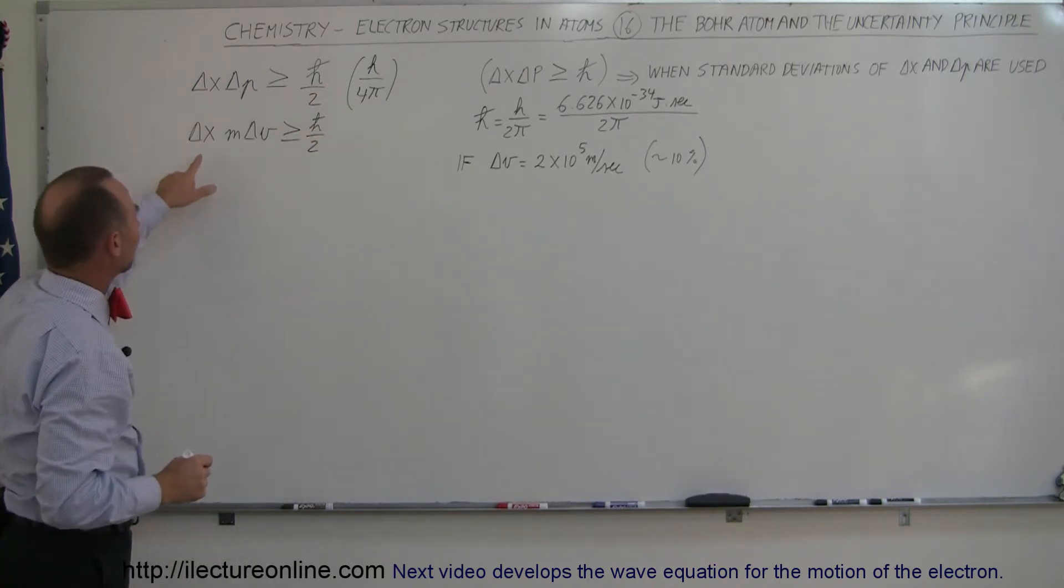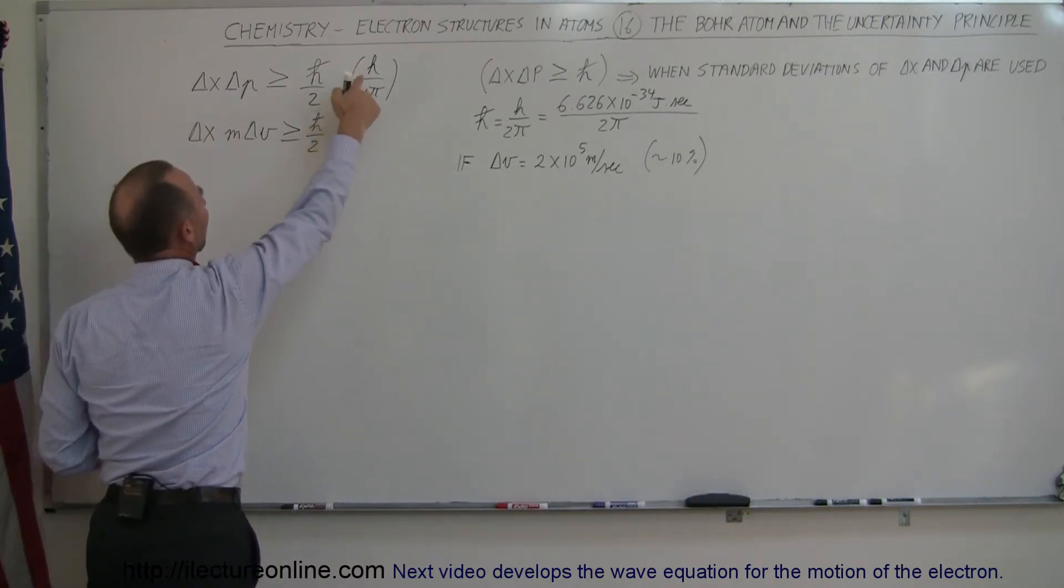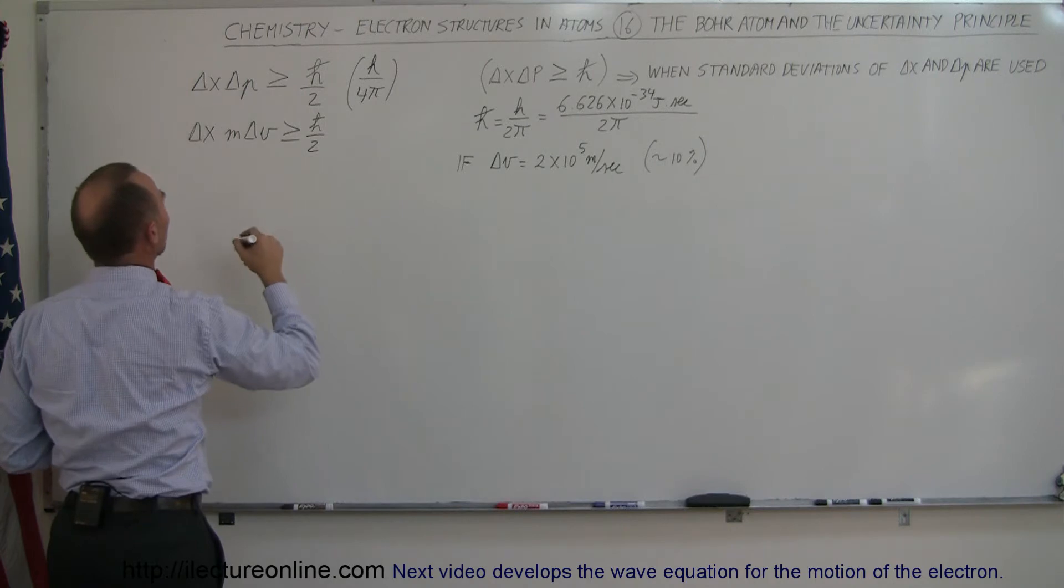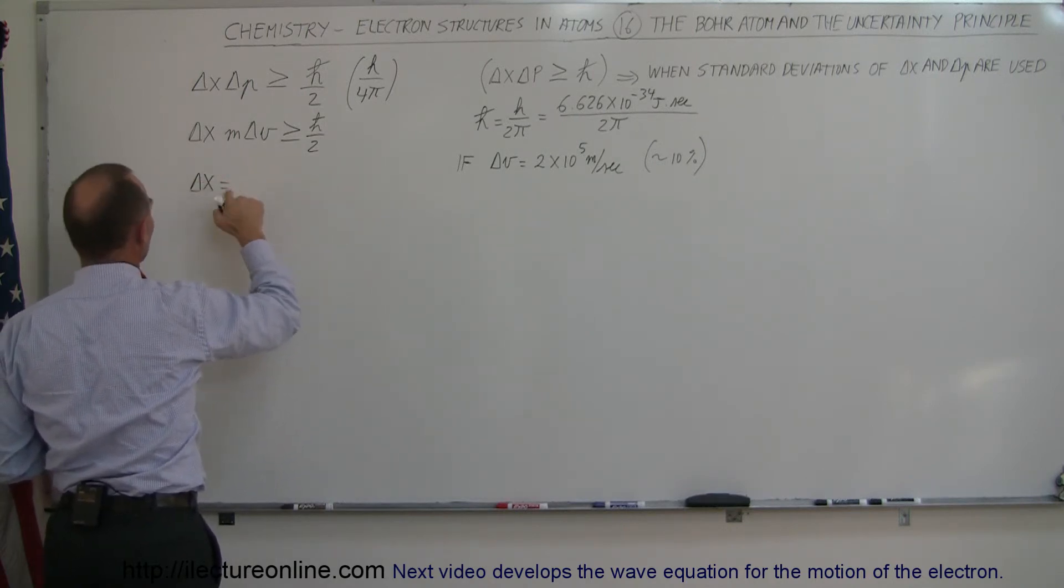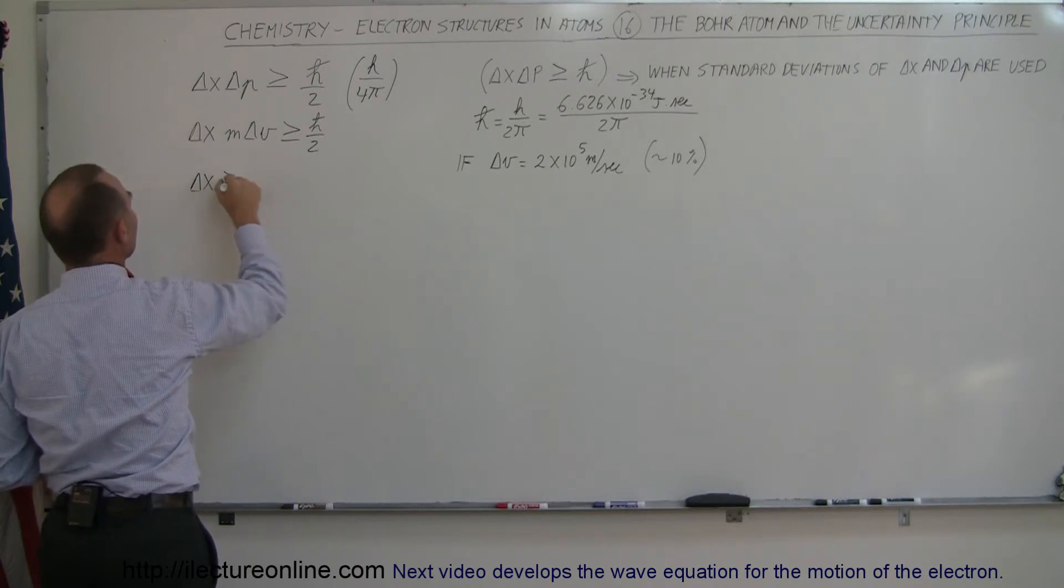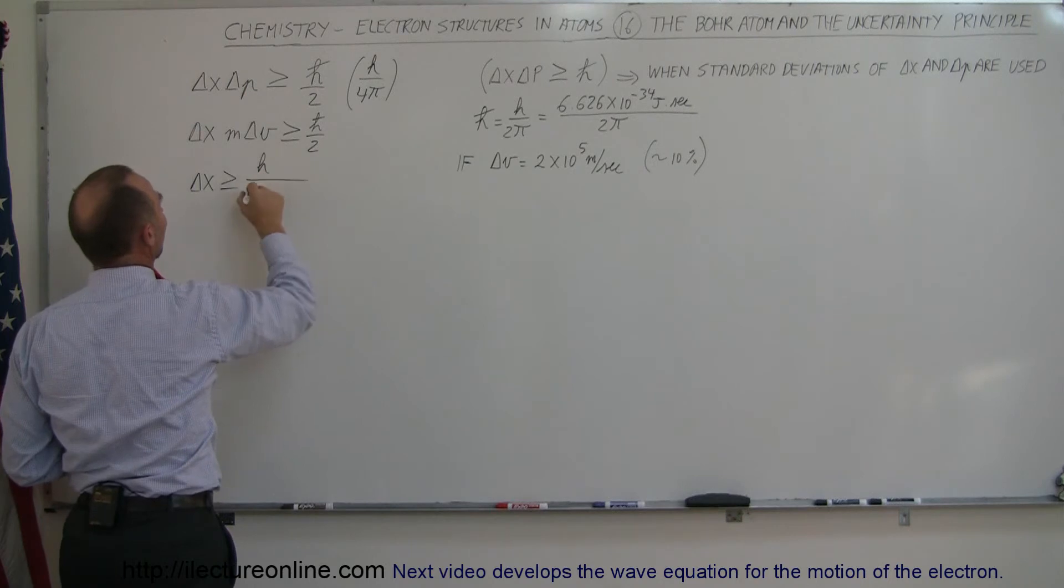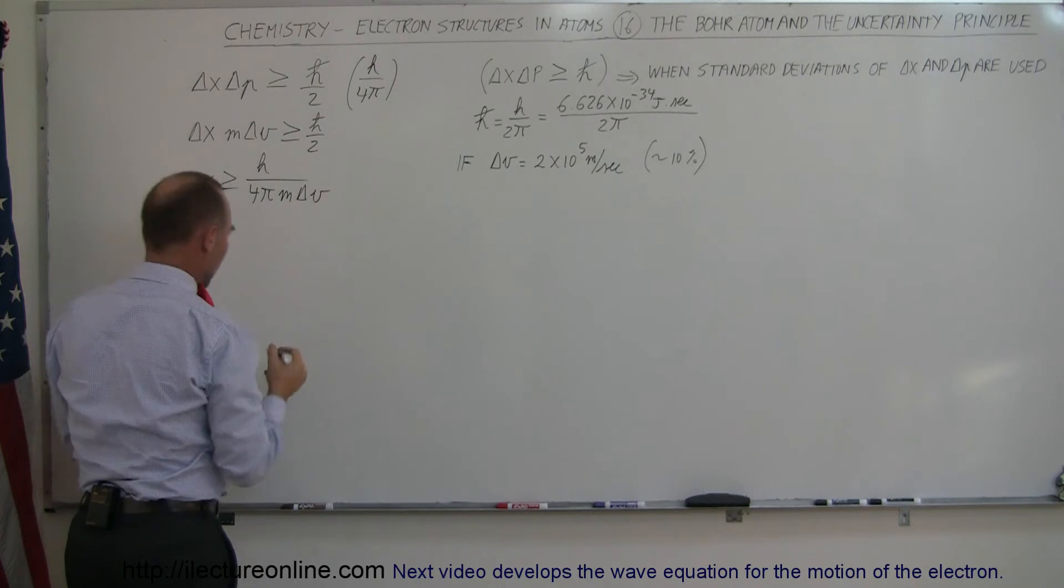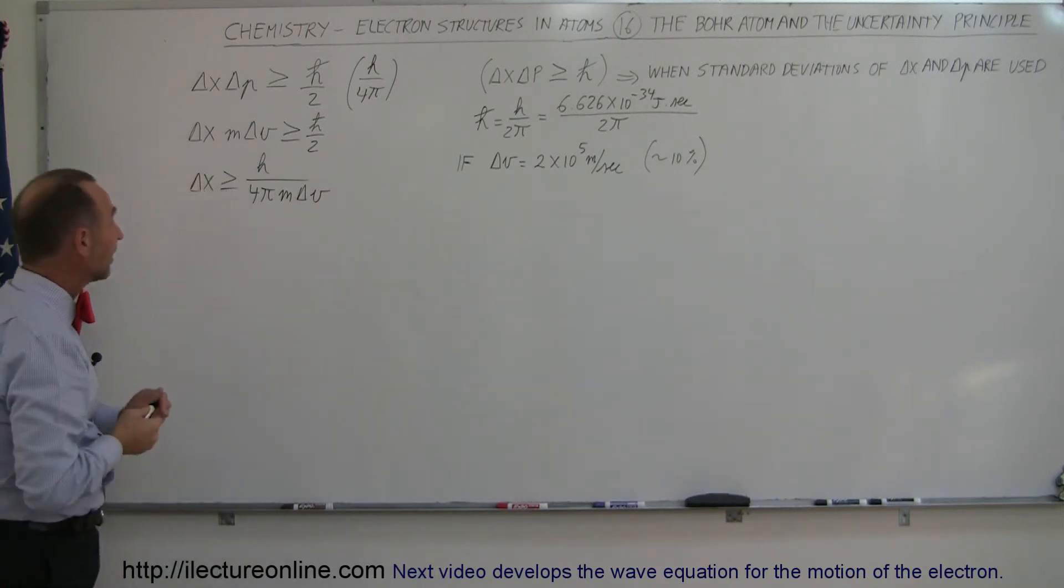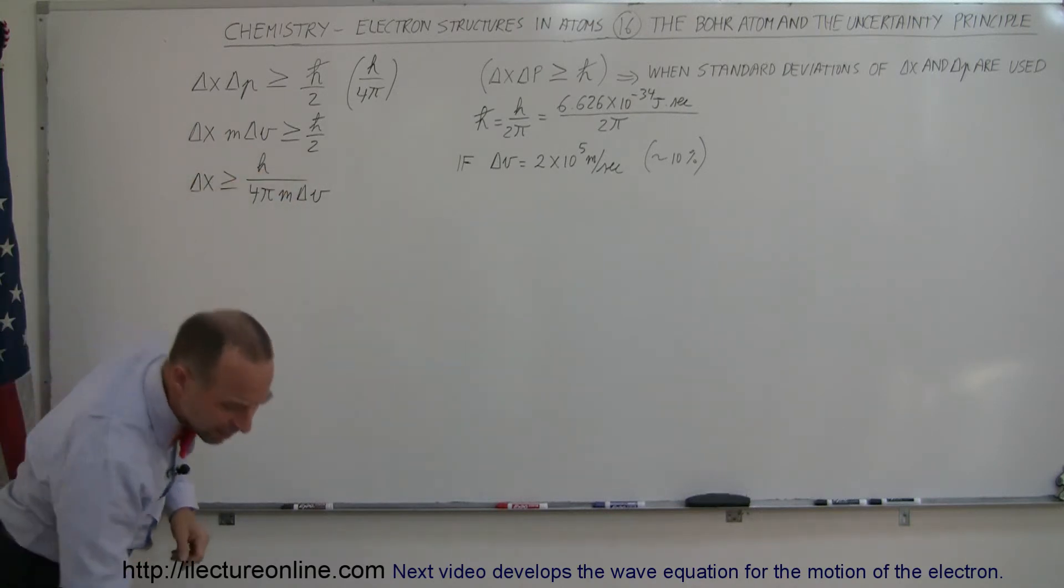Now, we're trying to find this, so we're going to move this to the other side, put it in the denominator, and we're going to write h-bar as h over 2π. That becomes h over 4π now. So we have Δx is greater than or equal to h divided by 4π, and now we move the m and the Δv over here, m times Δv. So what that means now is that the uncertainty in the position is always going to be greater than or equal to this quantity right here. Let's calculate it out and see what that really means.